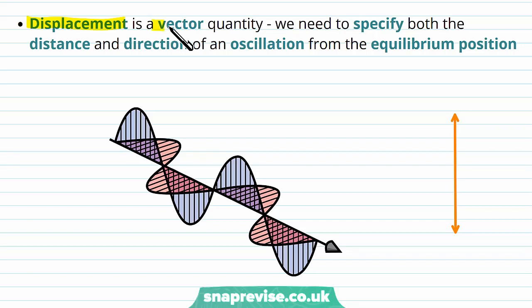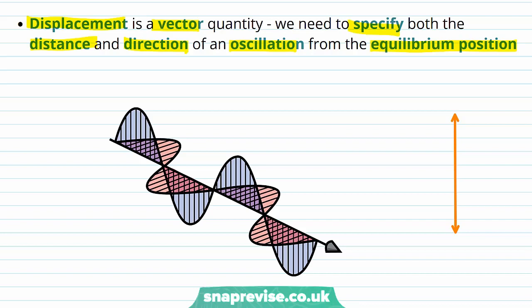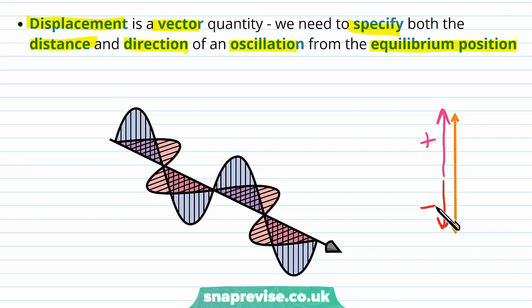Displacement is a vector quantity. We need to specify both the distance and direction of an oscillation from the equilibrium position. With displacement, we need to define one direction as positive and one direction as negative. So we might define this direction as positive and the opposite direction as negative.